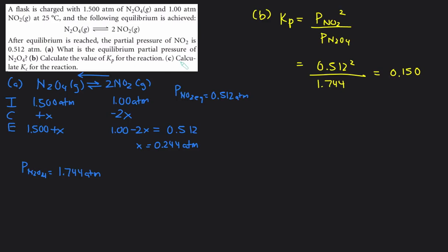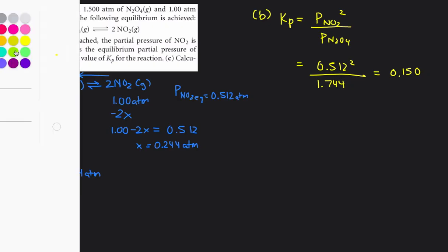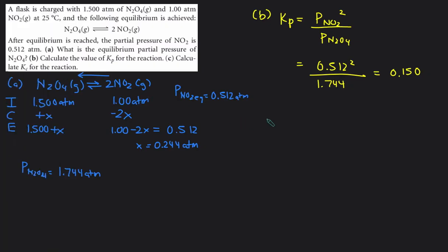In part c we're asked to calculate the Kc. So we have the Kp in part b and now we're converting it to Kc. So we just use the equation that connects Kp and Kc, and it's Kc equals Kp divided by RT raised to the power of delta n. Then substitute the numbers in.